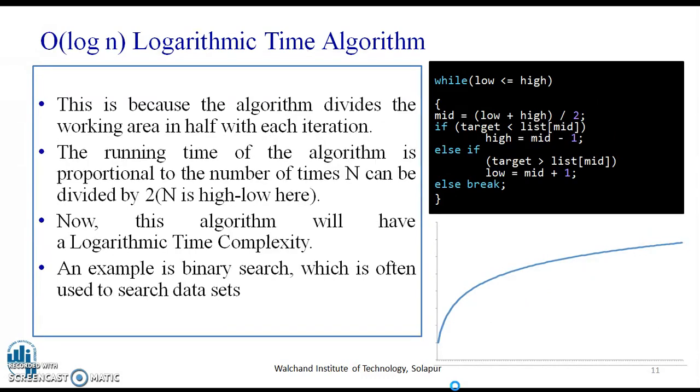Next, O(log n), that is logarithmic time algorithm. Here, the runtime grows logarithmically in proportion to n. Consider the given piece of code. Here, the algorithm divides the working area in half with each iteration. The running time of the algorithm is proportional to the number of times n can be divided. That is, here, it is 2. N is the high-low over here.